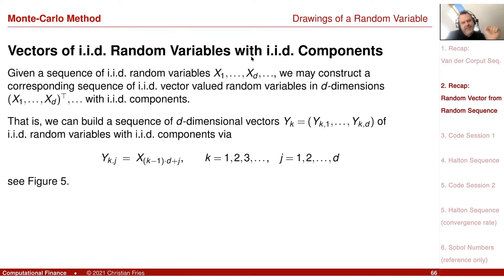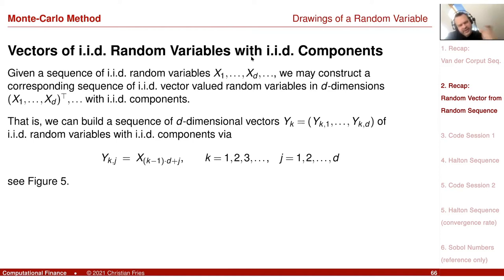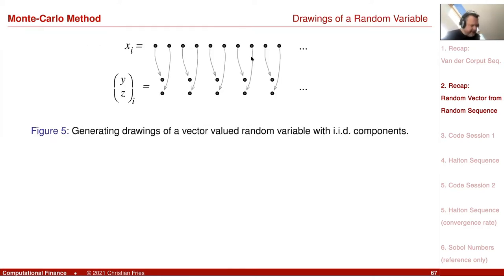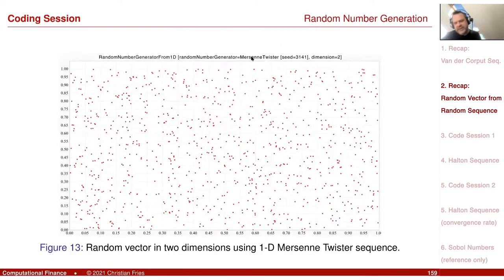So we had a session. If we like to generate a vector of random variables — or vector-valued random variables, or a random vector — then we can take a one-dimensional sequence and just populate every entry of the vector. When the vector is completed, we have generated one element of the vector-valued sequence. We already had some experiments: we were doing this in two dimensions and we got these nice plots.